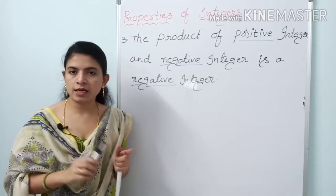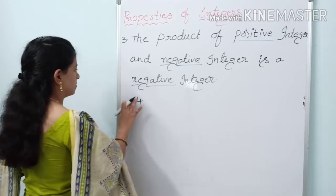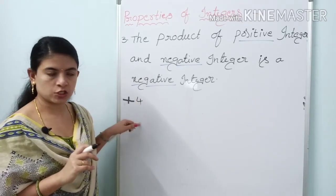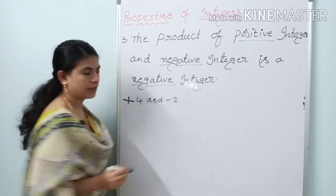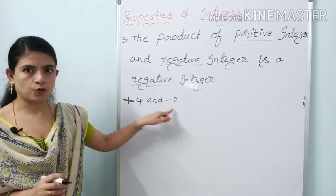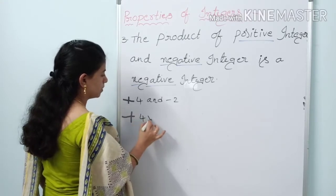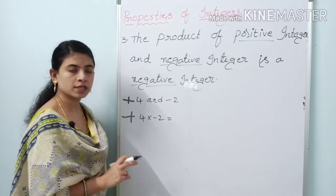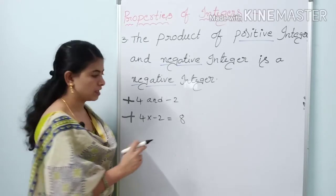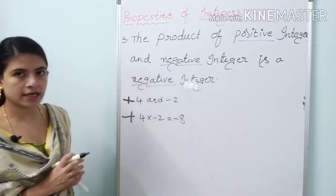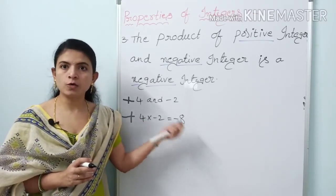Let us take one positive integer and one negative integer. For example, plus 4 and minus 2. Applying multiplication: 4 into minus 2 equals 8, and plus into minus gives minus. So the result is minus 8. If one is positive and another is negative, the product will be a negative integer.